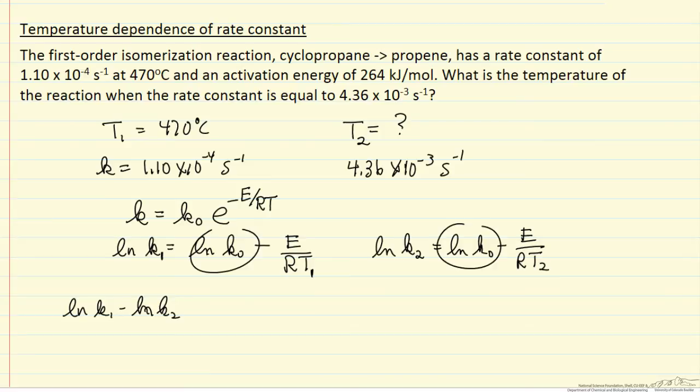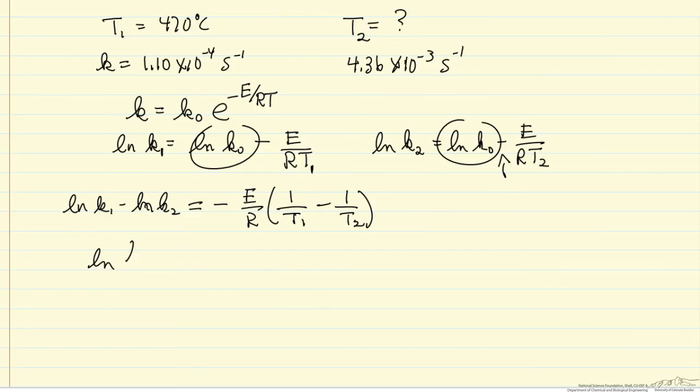These terms will cancel when you subtract. And then on the right side, minus E over R times 1 over T1 minus 1 over T2, keeping the minus sign in front. Then I can write this as the log of k1 over k2, and the right side is the same.